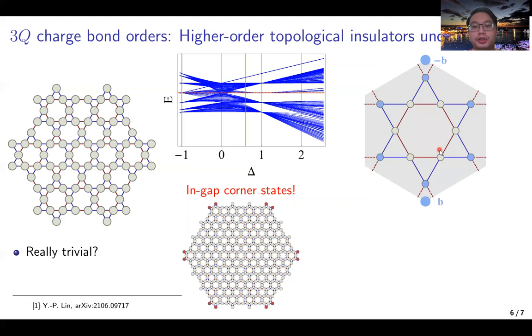How to understand these states? We can look at the unit cells of the 3Q charge bond order. If we focus on a particular point of delta E equals one, the six exterior points are decoupled from the interior hexagon. The interior hexagon forms a trivial insulator, where the Wannier center sits at the unit cell center. However, the six exterior points form the obstructed atomic insulator, where the Wannier centers are shifted to the unit cell corners, plus minus b.